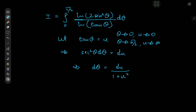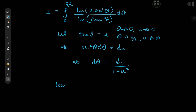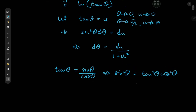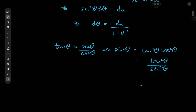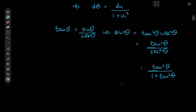Now what about the sine function? Well, tan θ = sin θ / cos θ, so sin²θ = tan²θ · cos²θ. But cos²θ = 1/sec²θ, so we have tan²θ / sec²θ = tan²θ / (1 + tan²θ). This implies that sin²θ = u² / (1 + u²).